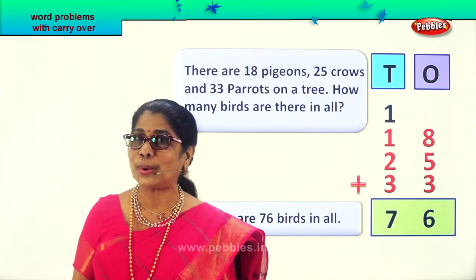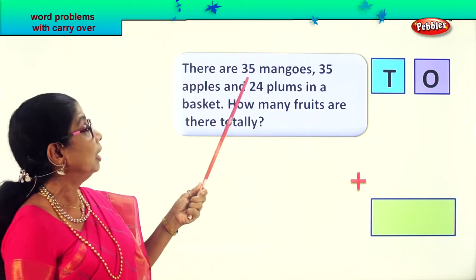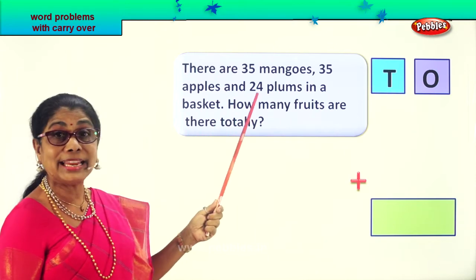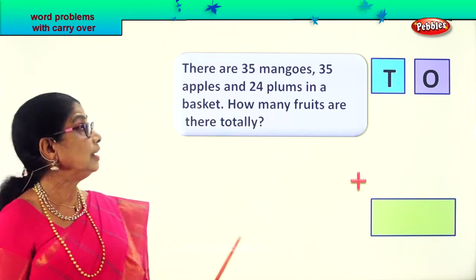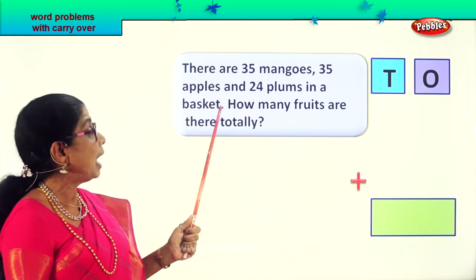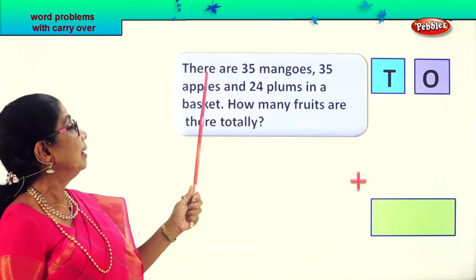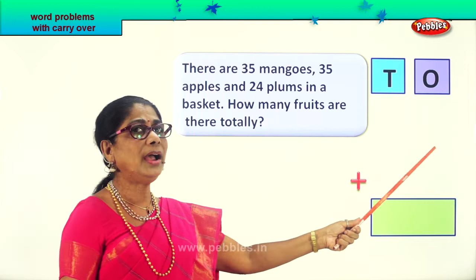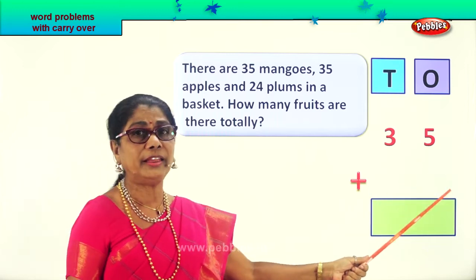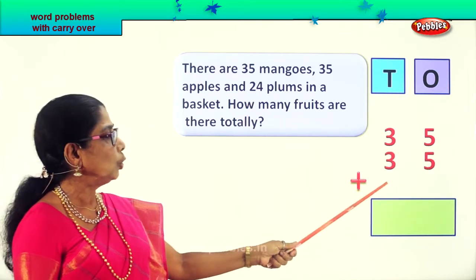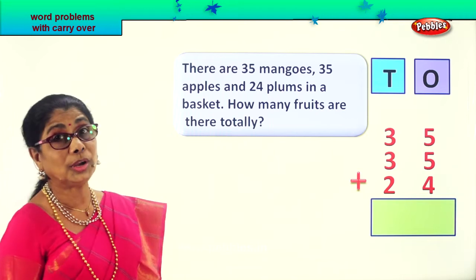Let's look at another new problem. There are thirty-five mangoes, thirty-five apples, and twenty-four plums in a basket. How many fruits are there totally? Number of mangoes: thirty-five. Number of apples: thirty-five. Number of plums: plus twenty-four. Now we add to find the total number of fruits.